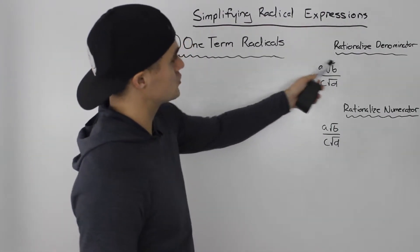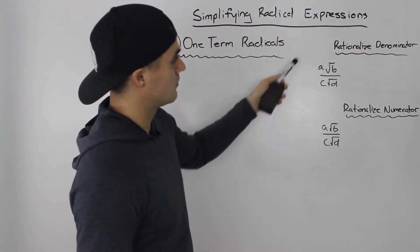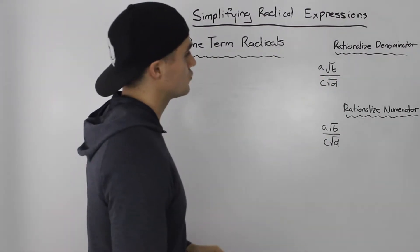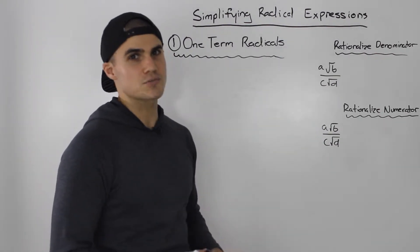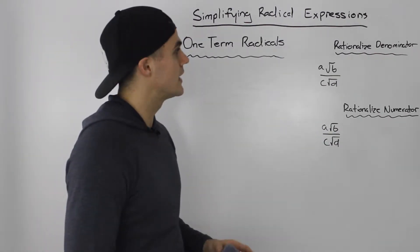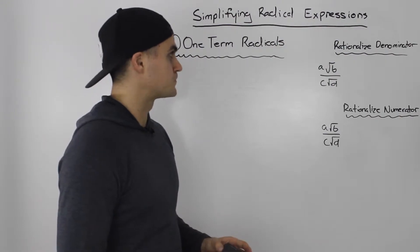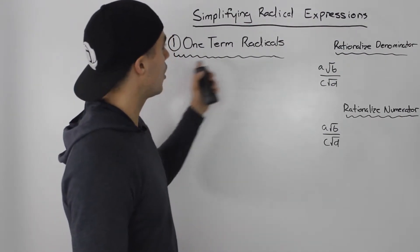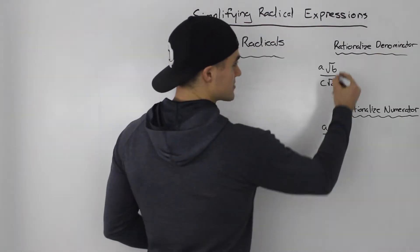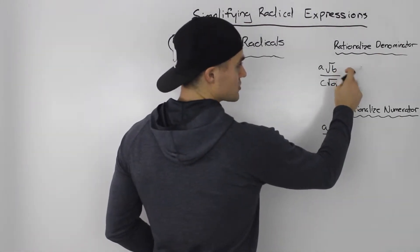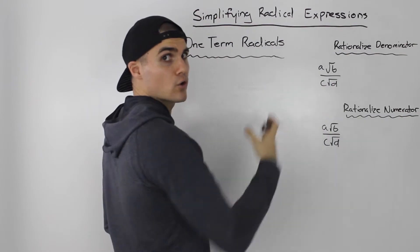One-term radicals usually take the form of this. It's A root B over C root D where A, B, C, and D are usually some kind of integers, but they could be really any numbers. The reason why they're called one-term radicals is because there's no other expression added or subtracted in the numerator or the denominator.